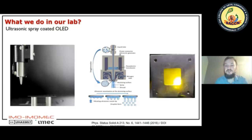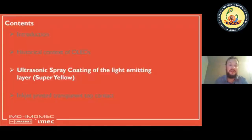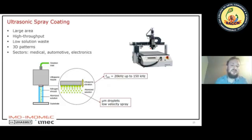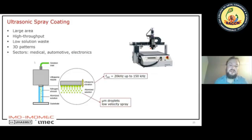Here you see the final organic light emitting device that is spray coated. I will specifically explain the active material we use — super yellow — for light emission. One of the questions with ultrasonic spray coating was: since a polymer is inside the liquid, what happens to the polymer due to the ultrasonic vibrations? Maybe the polymer will be cleaved. That is one of the things we investigated.